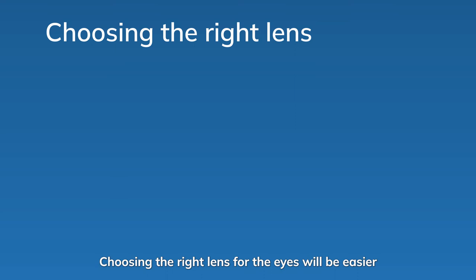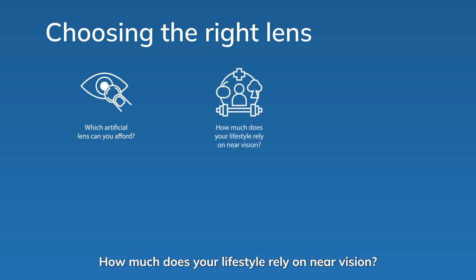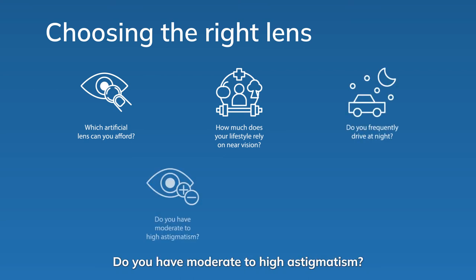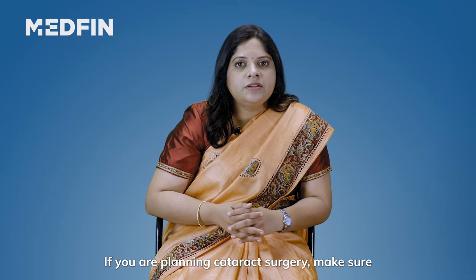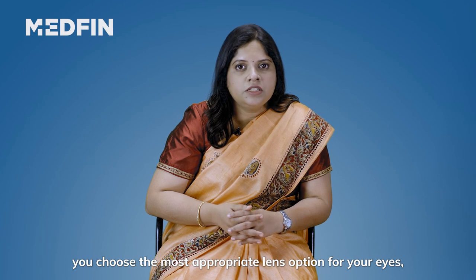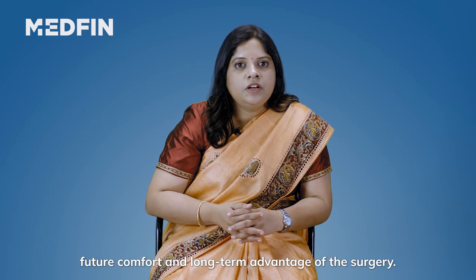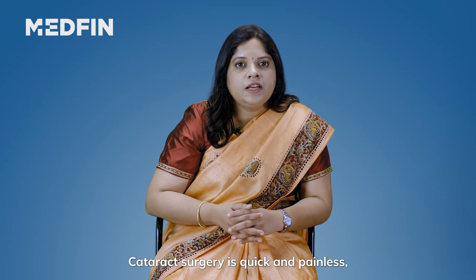Choosing the right lens for your eyes will be easier if you consider the following questions: Which artificial lens can you afford? How much does your lifestyle rely on near vision? Do you frequently drive at night? Do you have moderate to high astigmatism? Do you have any other eye conditions? Make sure you choose the most appropriate lens option for your eyes, considering future comfort and the long-term advantages of the surgery.